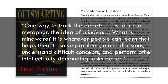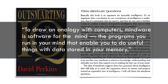One way to track the debate is to use a metaphor — the idea of mindware. What is mindware? It is whatever people can learn that helps them solve problems, make decisions, understand difficult concepts, and perform other intellectually demanding tasks better. The focus here is on identifying things that people can learn that can help them improve the quality of their thinking. Drawing on the analogy with computers, Perkins says: mindware is software for the mind — the programs in your mind that enable you to do useful things with data stored in your memory.